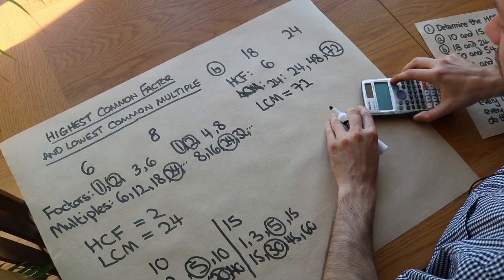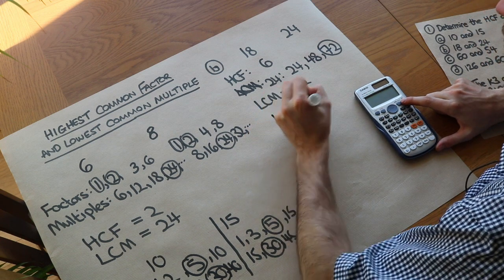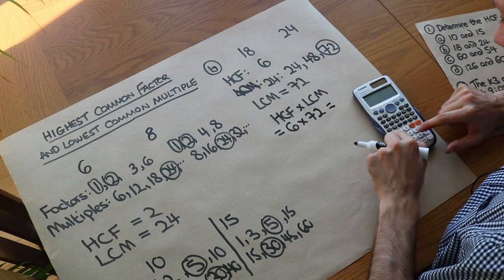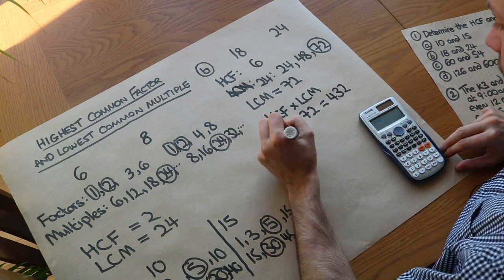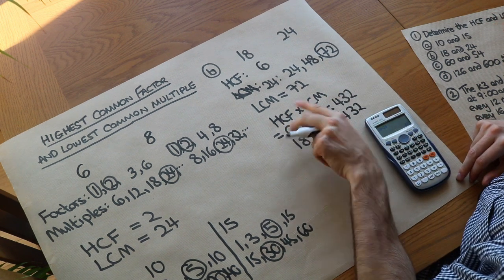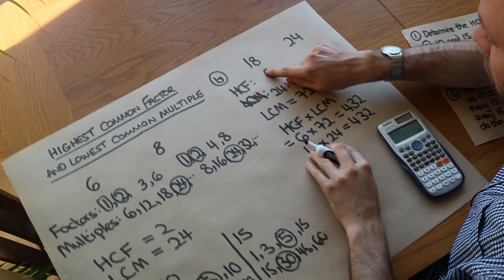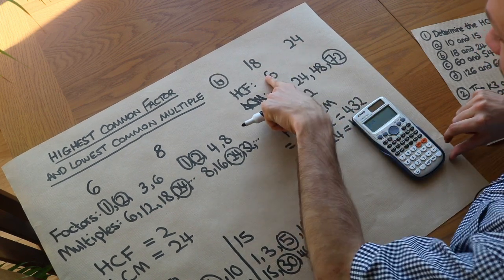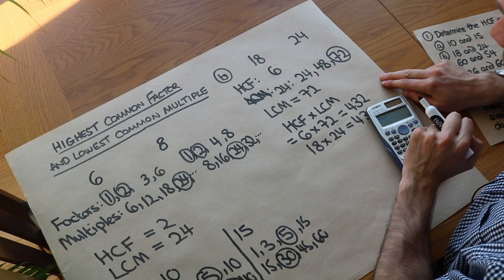Here's a neat little trick: if you multiply the highest common factor and the lowest common multiple — so 6 times 72 — that gives us 432. And if we multiply the two original numbers together, 18 times 24 also gives 432. So the product of the HCF and the LCM equals the product of the two original numbers. We can use this: if we know the HCF is 6, we can do 18 times 24 divided by 6 to get the LCM of 72.